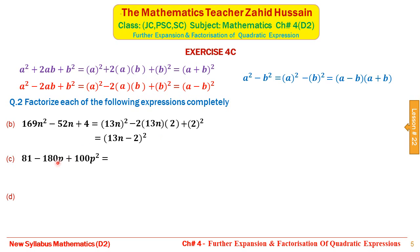For 81 − 180p + 100p²: 81 is the square of 9, so we write 9² minus 2 with two empty brackets, then 100p² as (10p)². In the first bracket we write 9 and in the second bracket we write 10p. This expression is the square of (9 − 10p), giving factors (9 − 10p)².